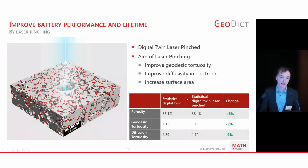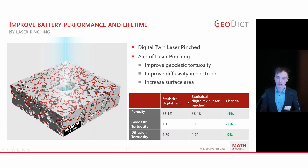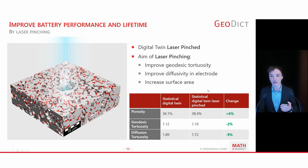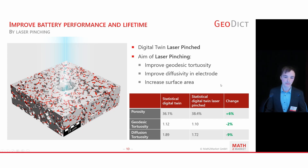The last battery case study I would like to talk about is laser pinching, where you put holes with a laser inside your electrode material. This increases porosity at first glance, but it also decreases the geodesic tortuosity and diffusion tortuosity, which therefore increases battery performance.